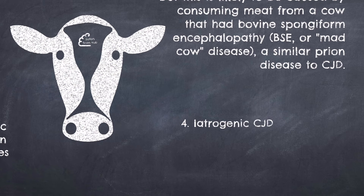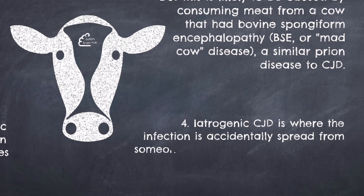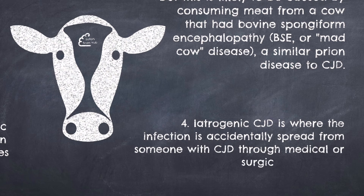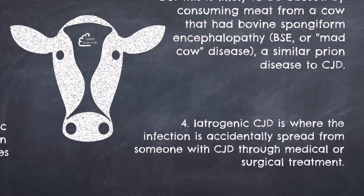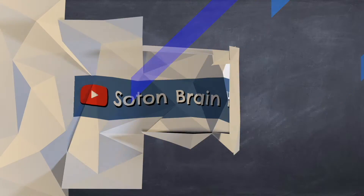Iatrogenic CJD is where infection is accidentally spread from someone with CJD through medical or surgical treatment — for example, through a contaminated corneal transplant or through a blood transfusion. Again, this is very rare, and nowadays steps are taken to minimise the risk of contamination during these procedures.